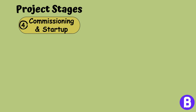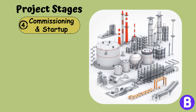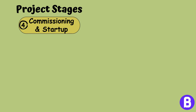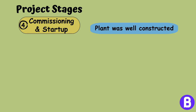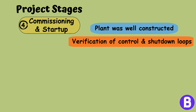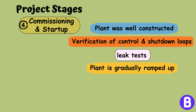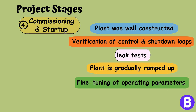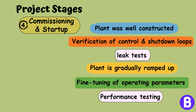The final stage is the commissioning and start-up of the facility, where the process design comes to life as the plant is brought online and begins to produce the desired products. This critical phase includes ensuring that the plant was constructed as per the design, verification of control and shutdown loops to confirm they are well tuned and their logic is implemented as per the design, carrying out leak tests to ensure flanges are not leaking, addressing any issues that arise during start-up, gradually ramping up to full production capacity, fine-tuning of operating parameters to ensure the plant meets its performance targets, and performance testing of all equipment to hand over the plant to the client.